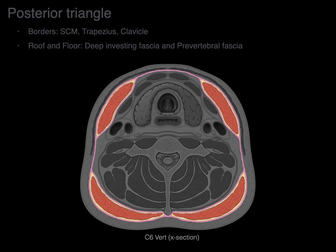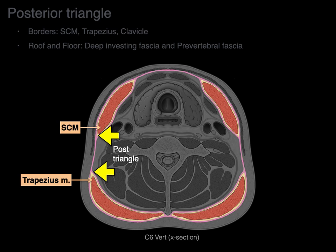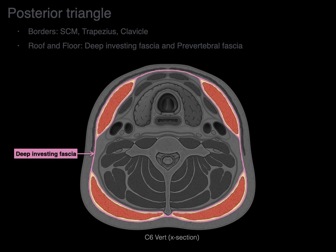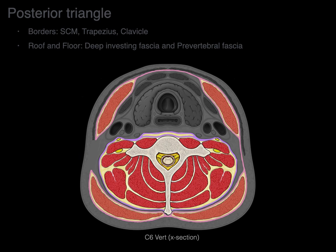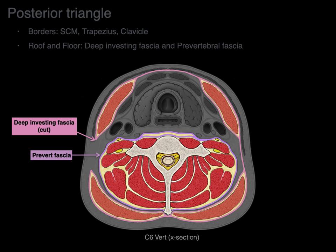Let's do that again. There's our sternocleidomastoid and the trapezius — what's in between them? That's the posterior triangle of the neck. The roof is the deep investing fascia. If we take a scalpel and cut, we see the deep investing fascia is cut. The floor is the prevertebral fascia, in this case surrounding our scalene muscles.